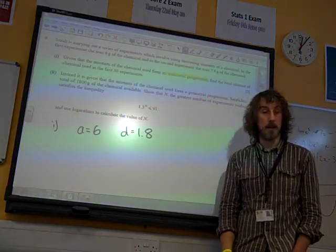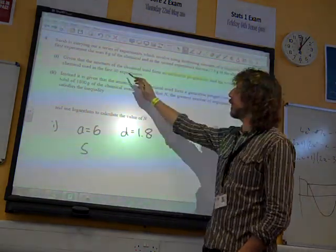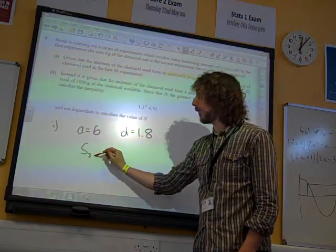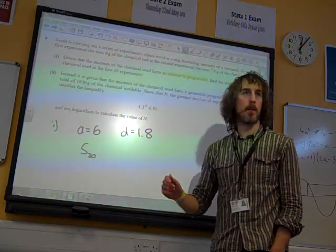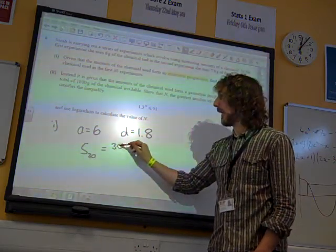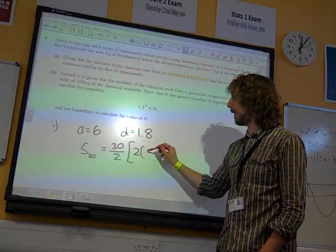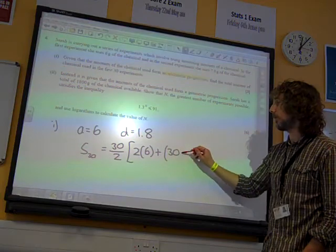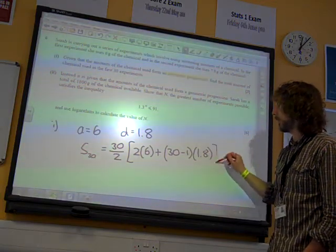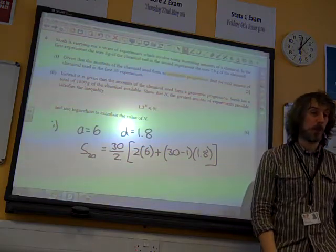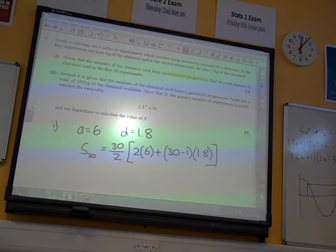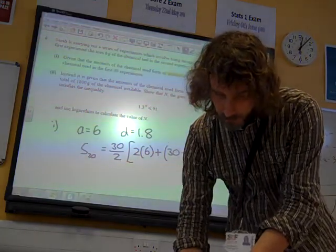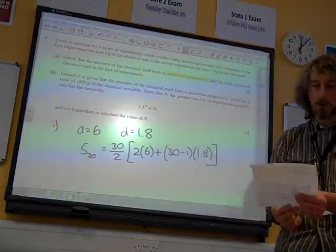And we are supposed to be finding the sum of the first 30 experiments. If we look in the formula booklet it says that the sum of the first n terms is n over 2, 2a plus n minus 1 times d. At which point we carefully type that into the calculator. And it gives us a value of 963.